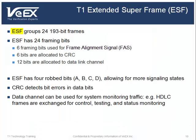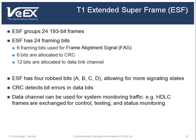The extended superframe technique, which groups 24 193-bit frames, was created to add additional information for monitoring the quality of the T1 line. Because it has 24 frames, the ESF has 24 framing bits. Six are used for frame alignment signals. Another 6 bits are allocated to a cyclic redundancy check, or CRC, and the remaining 12 bits are allocated to the data link channel. The CRC detects bit errors in the data bits, and the data link channel can be used for system monitoring traffic.